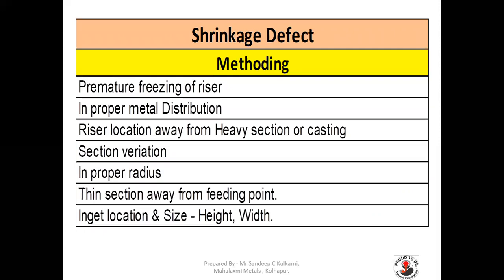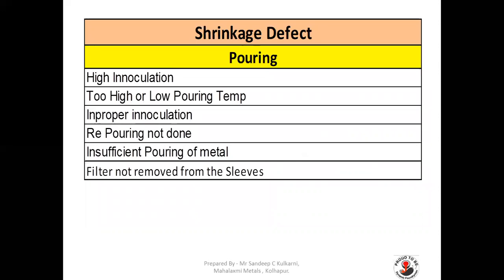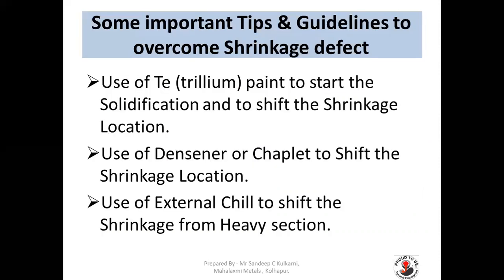In Maintaining: premature freezing of riser, improper metal distribution, riser location away from heavy section, section variation, improper radius in section away from feeding point. Ingate location and size — specifically the height of the ingate — can cause ingate shrinkage, as we saw in the picture earlier. Pouring time too high or too low, too small fillets, sharp internal corners, riser size too small, improper alignment of riser, improper calculation of riser, ingate, and feeder. Low sand-to-volume ratio, high inoculation, too high or too low temperature, improper inoculation, re-pouring not done, insufficient pouring of metal, and filter not removed from the sprue are all possible causes for shrinkage defect.